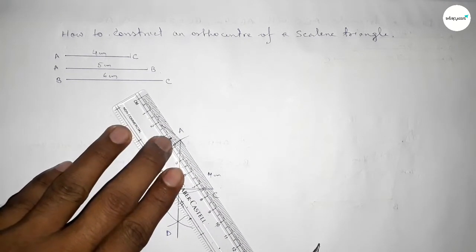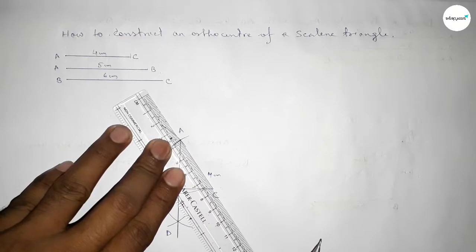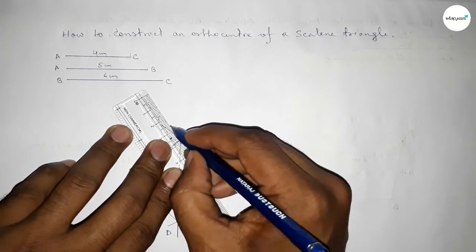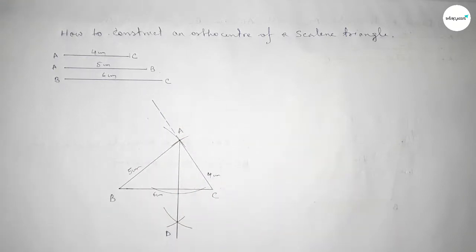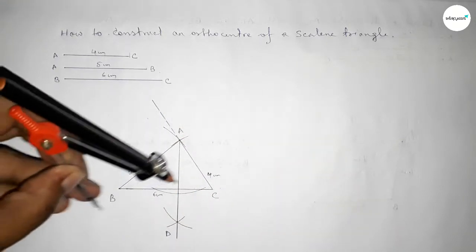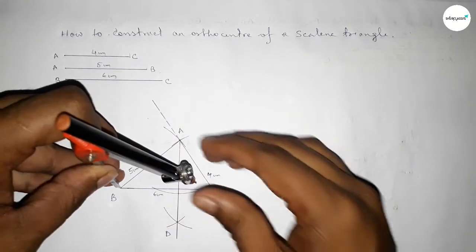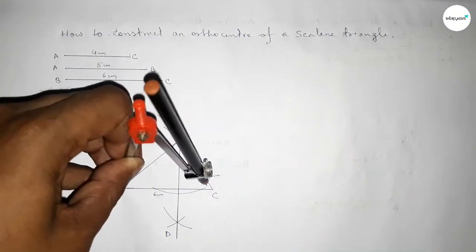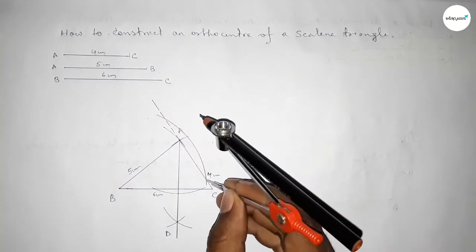Next we have to extend the line AC using a scale, extending it in this direction to draw a perpendicular line on the side AC. So putting the compass on point B and taking any length and drawing an arc.